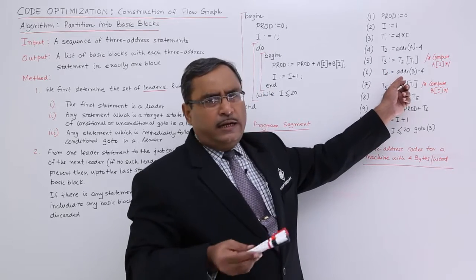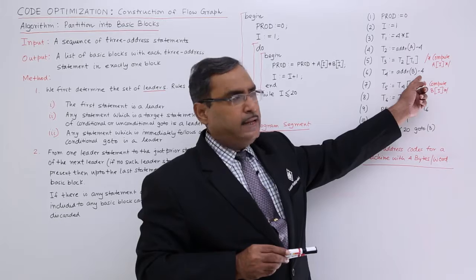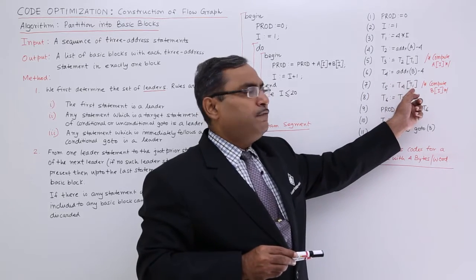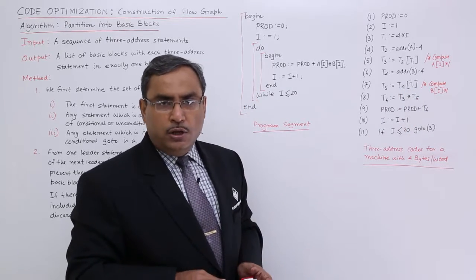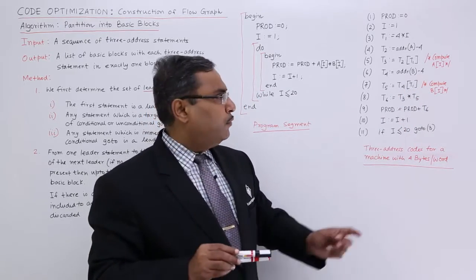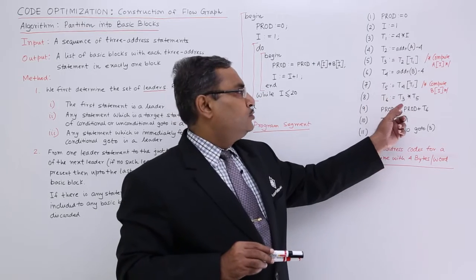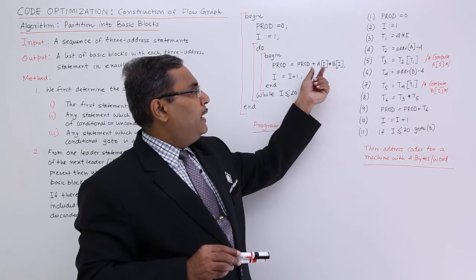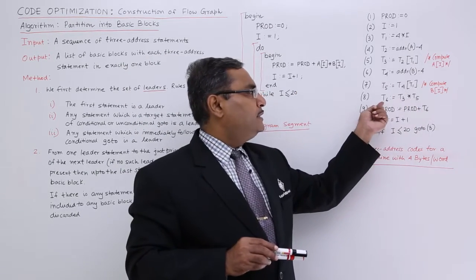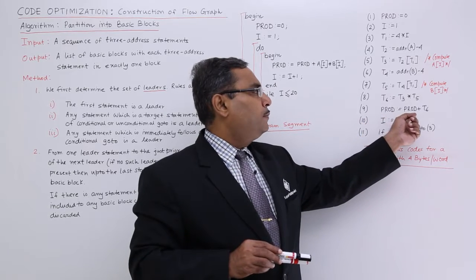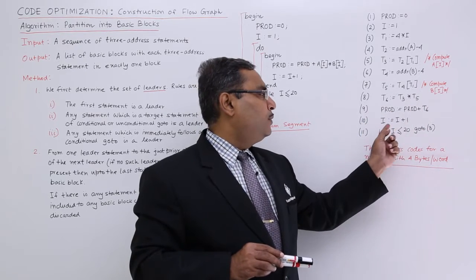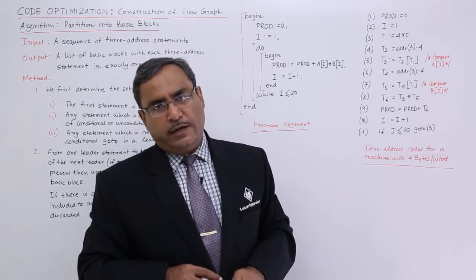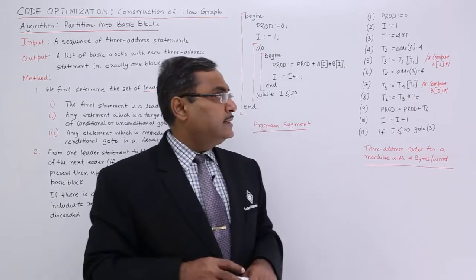Similarly, let address of array b be 4000. Then 4000 minus 4 equals 3996, assigned to t4. With offset 4 from base 3996, we get back address 4000, and the content from location 4000 is assigned to t5. Now t3 and t5 are multiplied to give t6. Then product equals product plus t6, i equals i plus 1, and if i is less than or equal to 20, go to step 3. That is how the three-address code executes.